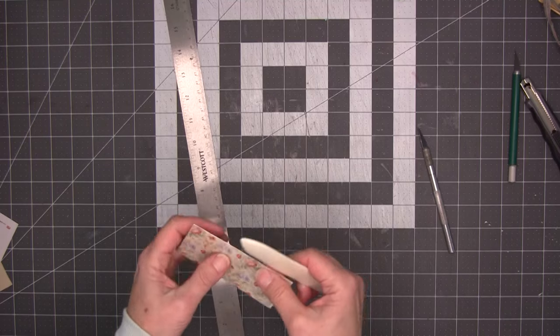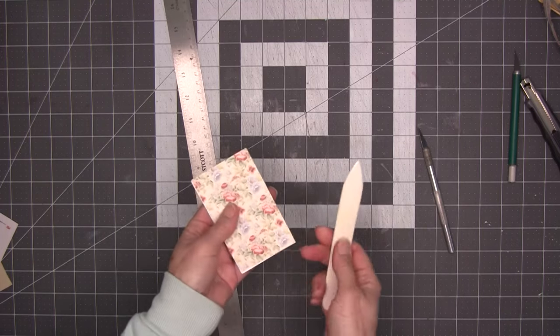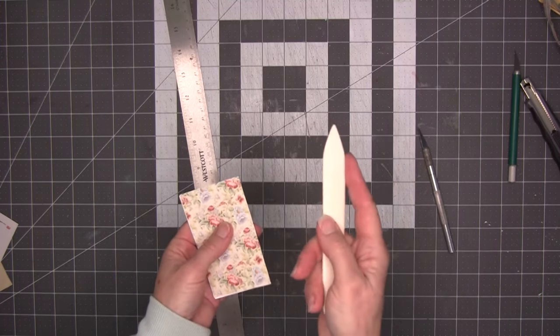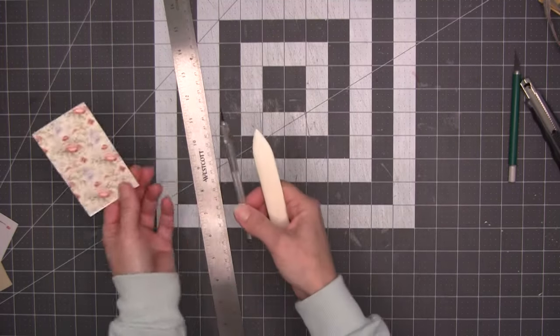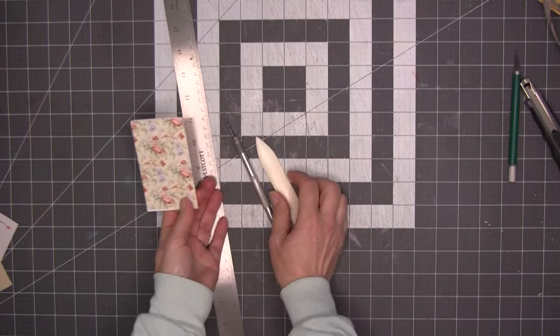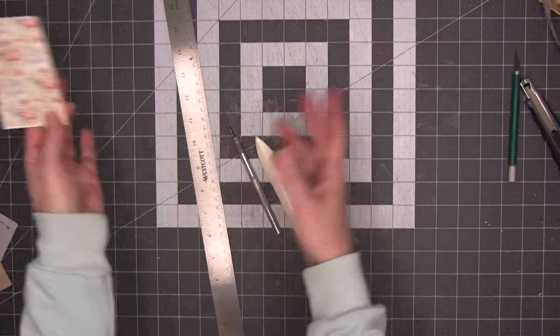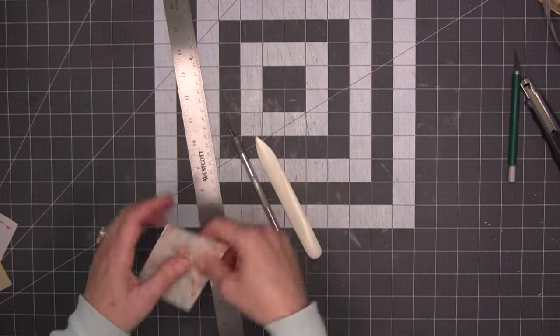If you're using a synthetic newer bone folder that you might have bought online, I would not suggest the acetone - it will eat into plastics. So anyway, now you see knife, ruler, bone folder. If you have those things you can make a book or a card at least.